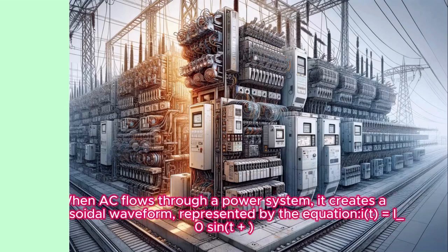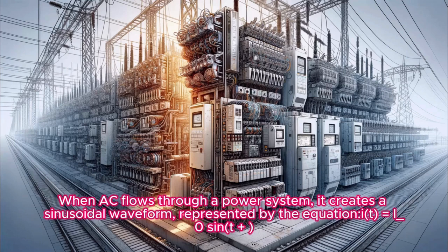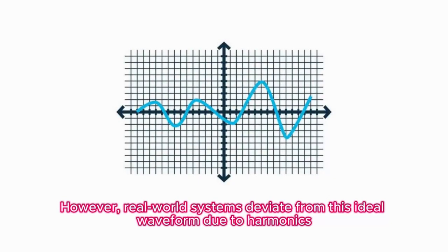When AC flows through a power system it creates a sinusoidal waveform represented by the equation i(t) = I_0 sin(ωt + φ). However, real world systems deviate from this ideal waveform due to harmonics.